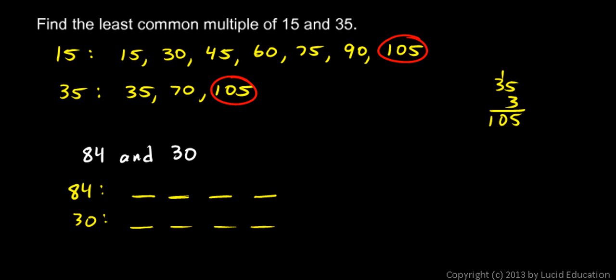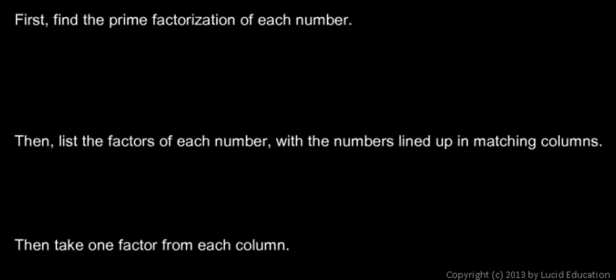And I'll show you that method now, and we'll use these two numbers, 84 and 30. We want to find the least common multiple of 84 and 30. Here's the approach. First we find the prime factorization of each number.